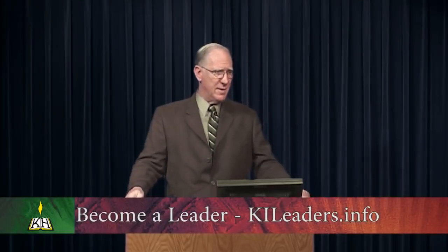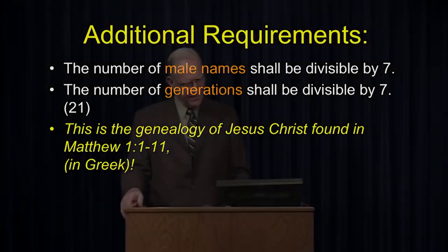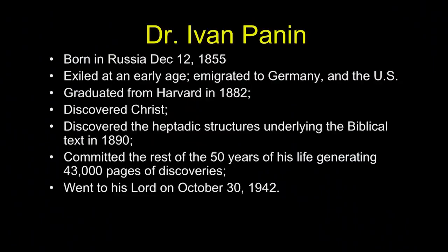You probably guessed where I'm headed here, because this is a description of the genealogy of Jesus Christ in the first 18 verses of the book of Matthew. Incidentally, we're talking about the Greek, not the Hebrew or English. In English it's soft — you can fudge around. Greek is incredibly precise; every verb has to meet five conditions. It's a tight, precise language. What I'm sharing with you here, of course, is the discoveries of Dr. Ivan Panin.